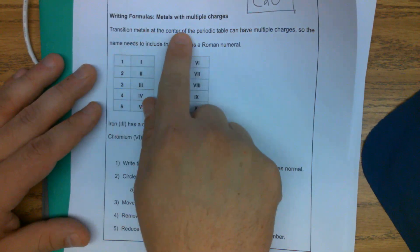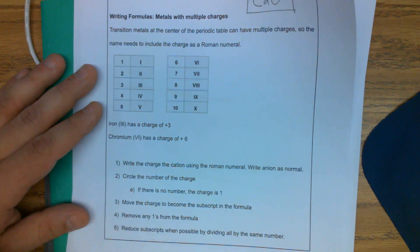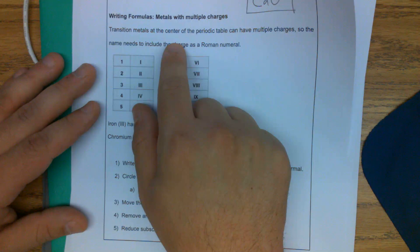All right, the next one we're looking at is going to be writing formulas with metals with multiple charges. The metals that have more than one charge, they're called transition metals.